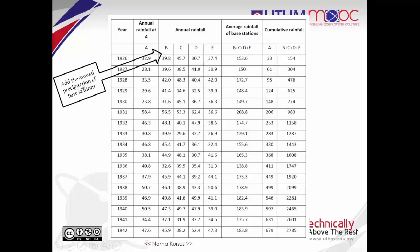So first, add the annual precipitation of base stations. So here we have 39.8 plus 45.7 plus 30.7 plus 37.4. You get 153.6 or 154.